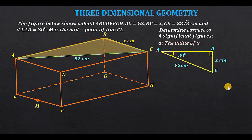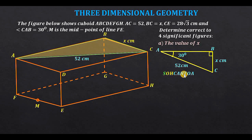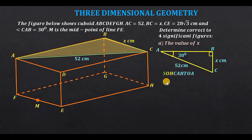We are going to pick the suitable ratio using SOHCAHTOA, where S stands for sine, C for cosine, T for tangent. Sine is opposite over hypotenuse, cosine is adjacent over hypotenuse, tangent is opposite over adjacent. With respect to 30 degrees, side BC is opposite and AC is hypotenuse, so we use sine. Therefore, sine of 30 degrees equals the opposite side X over the hypotenuse 52.